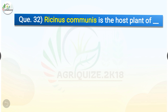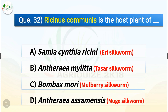Question number thirty-two: Ricinus communis is the host plant of which silkworm? The options are: Samia cynthia ricini, Antheraea mylitta, Bombyx mori, or Antheraea assamensis. The correct answer is option A — Samia cynthia ricini, which is the Eri silkworm. Antheraea mylitta is the Tasar silkworm, Bombyx mori is the Mulberry silkworm, and Antheraea assamensis is the Muga silkworm.